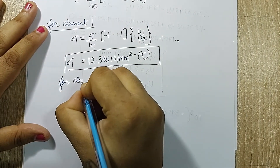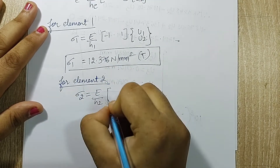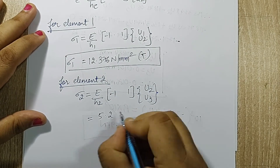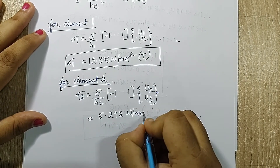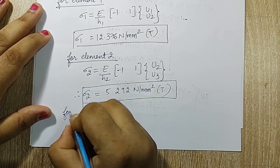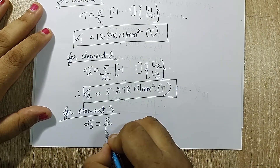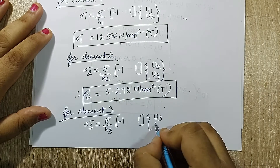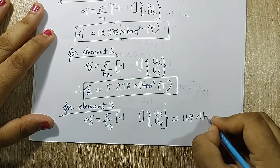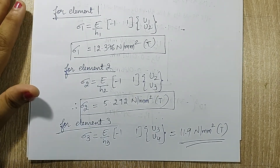For element 2, σ₂ = (E/h2) × [−1  1] × {u2; u3}. When you solve this you get 5.292 N/mm² — also tensile. For element 3, σ₃ = (E/h3) × [−1  1] × {u3; u4}, giving 11.9 N/mm². This body was completely subjected to tensile loading, hence all stress values are positive.